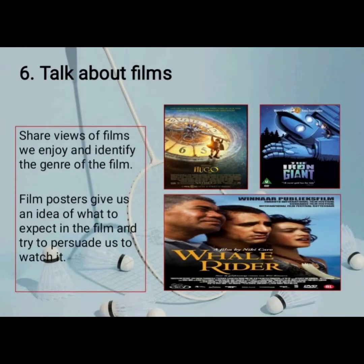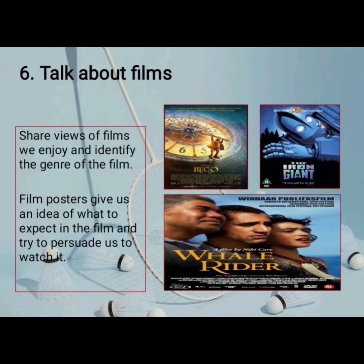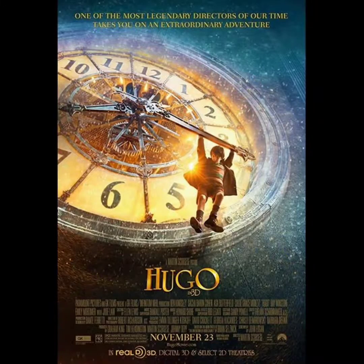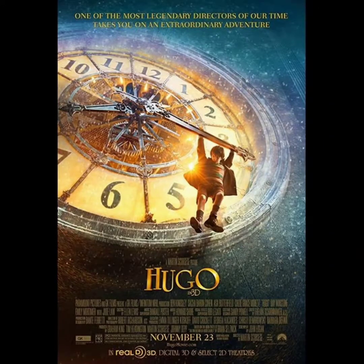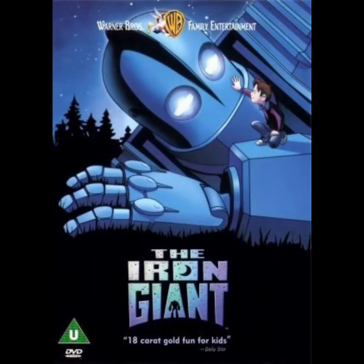The sixth topic: Talk About Films. We all have a personal view of a film. When we share our views about a film we enjoy, we may instill an interest in others about the film. You should be able to identify the genre of the film posters given on page 125. Film posters give us an idea of what to expect in the film and try to persuade us to watch it. Some of the informative details and persuasive devices we find in these posters are: award details, actor details, pictures of characters and events, colors, print size and style, and age details.